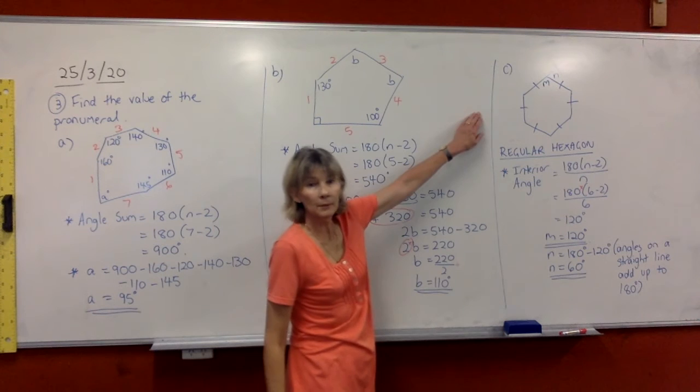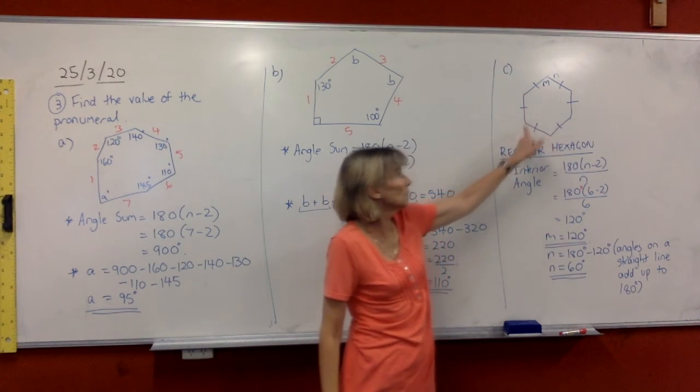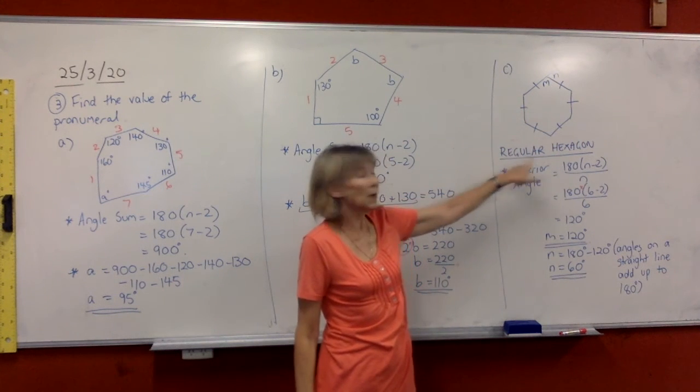Over here on this one, this shape is a regular shape because all the sides have been marked as equal. It's got six sides, so it's a regular hexagon.